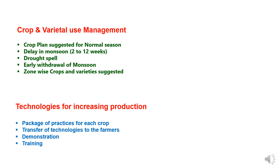The first component, crop and varietal use management, covers planning under normal growing conditions, under delayed monsoon where delay is anticipated for 2 to 12 weeks, under drought spell conditions if there is a chance of early withdrawal of monsoon, and zone-wise crops and varieties recommended according to conditions. The second component is technologies for increasing production, using the recommended package of practices for each crop and transfer of technologies to farmers.